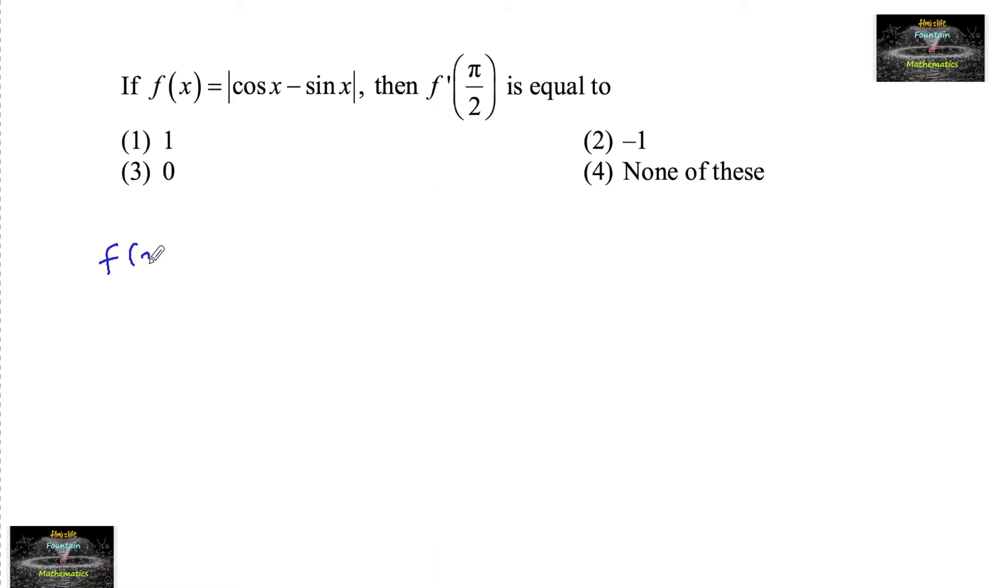Given f of x is equal to mod of cos x minus sin x, then f prime of π by 2 we need to find, that is differentiation with respect to x.